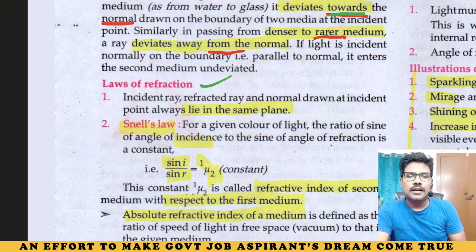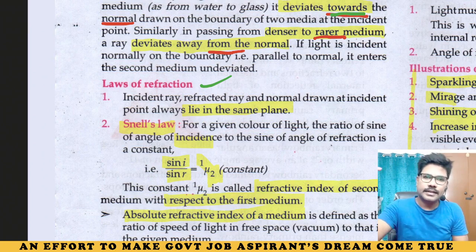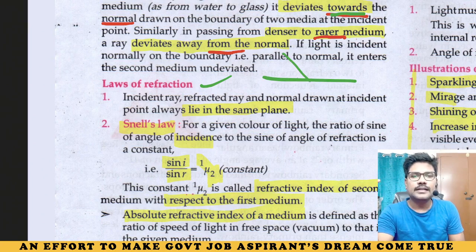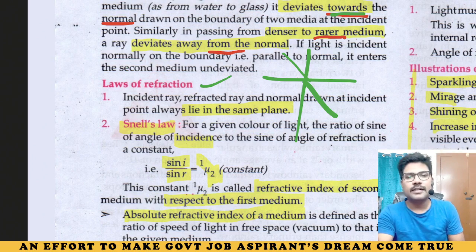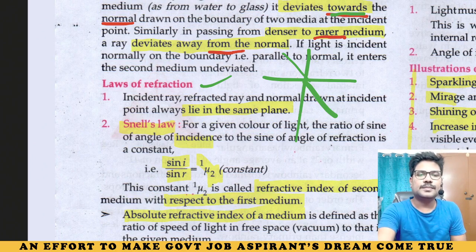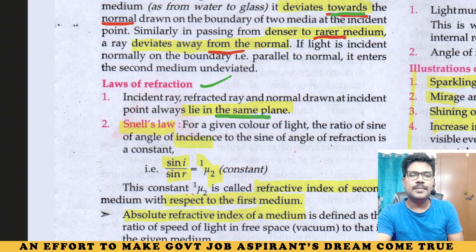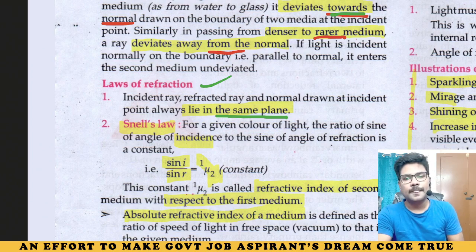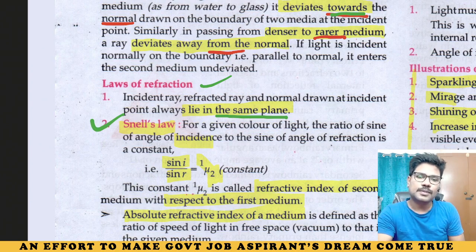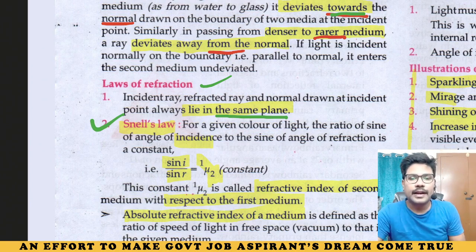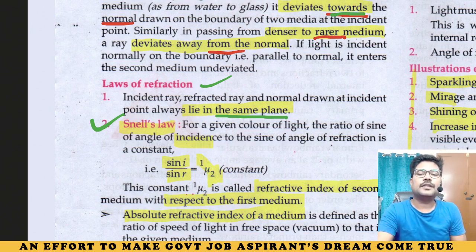The laws of refraction state: the incident ray, the normal, and the refracted ray — these three lie in the same plane. Second, Snell's law: sine i divided by sine r equals the refractive index of medium 1 with respect to medium 2, that is μ₁₂.